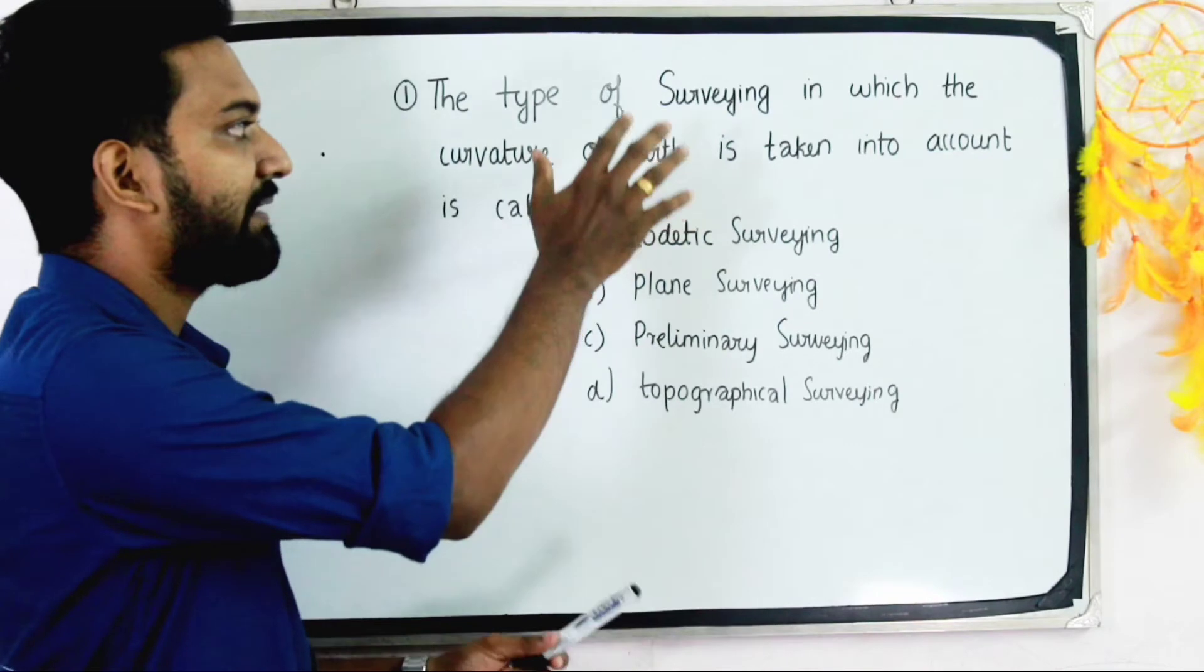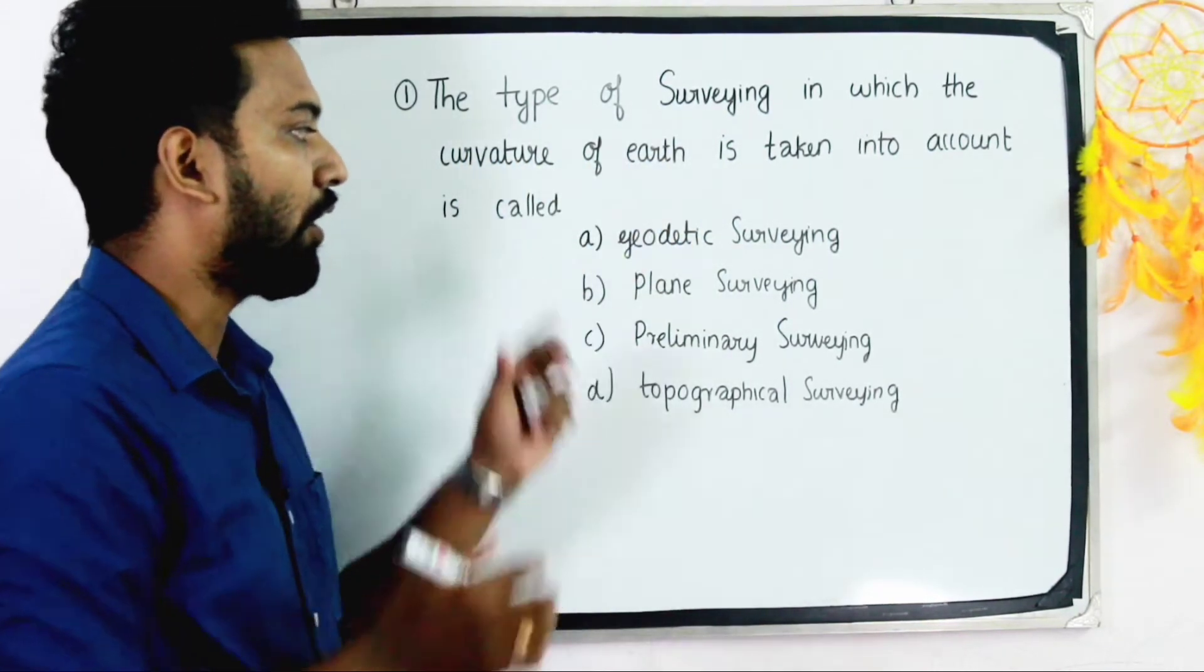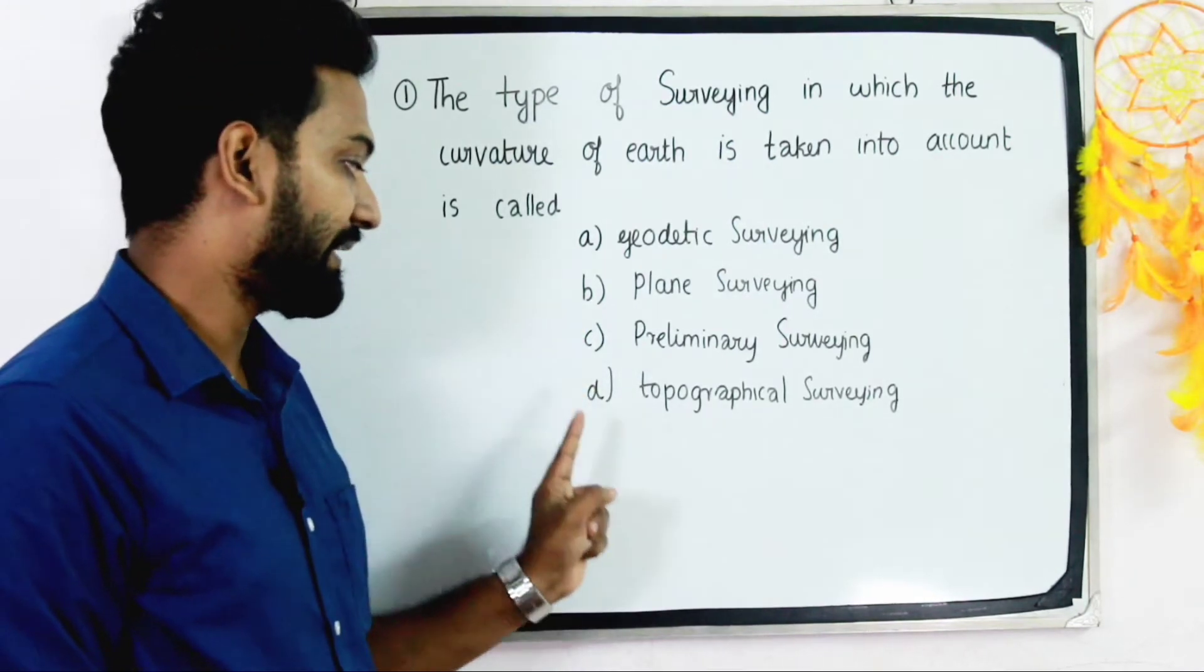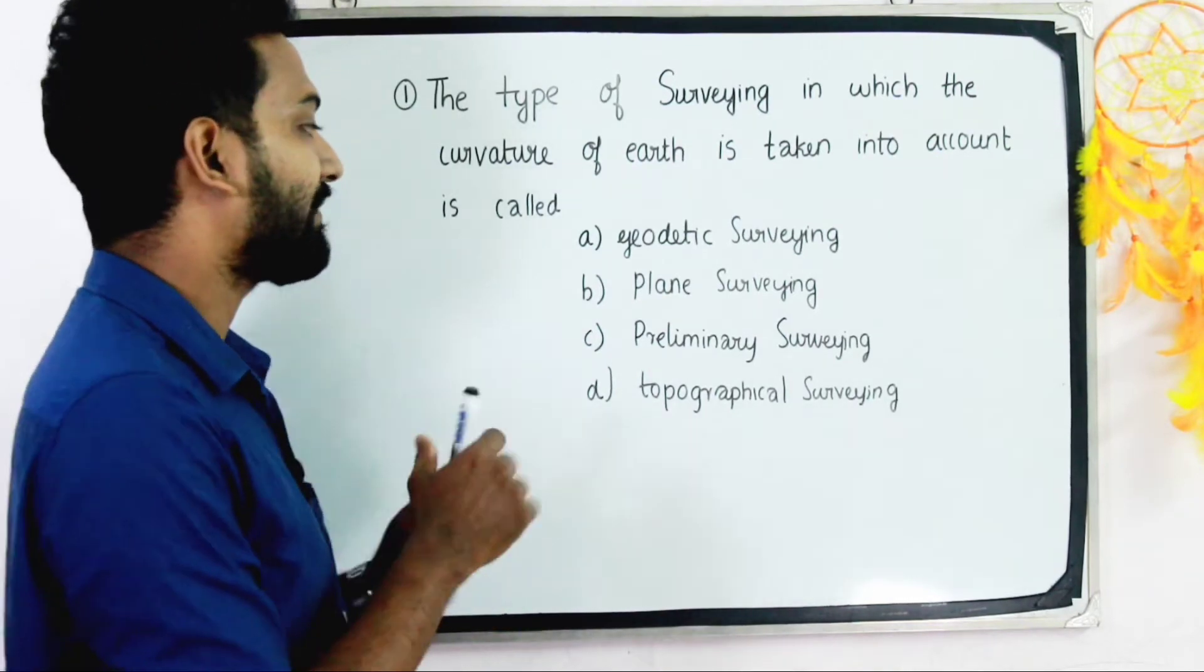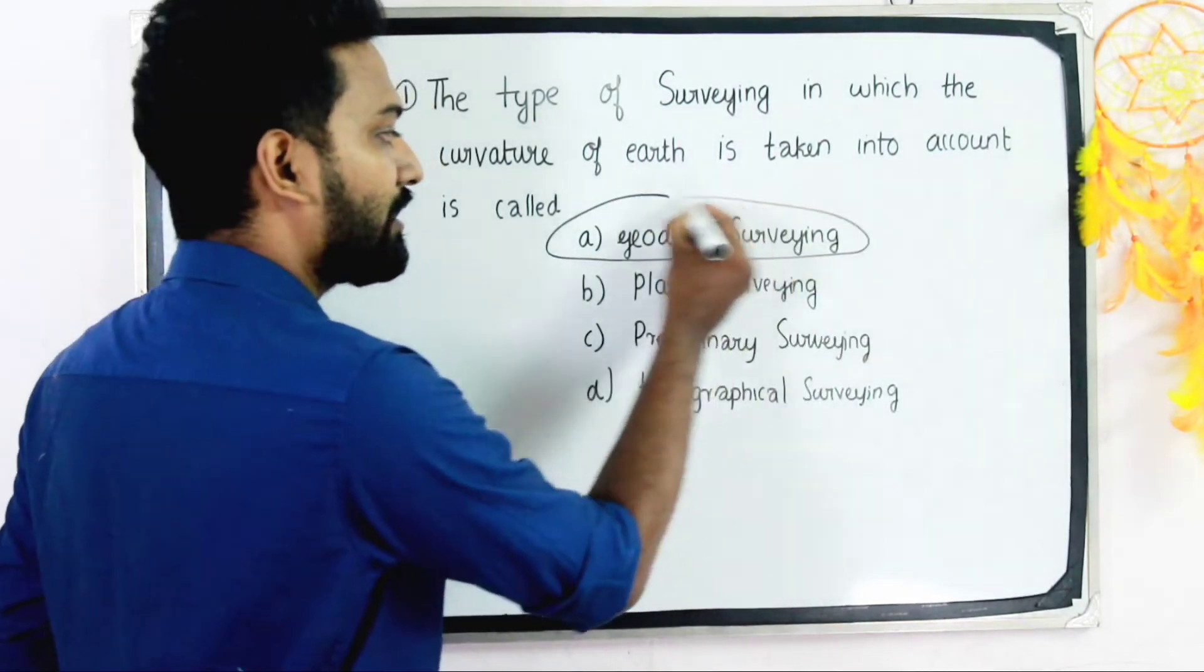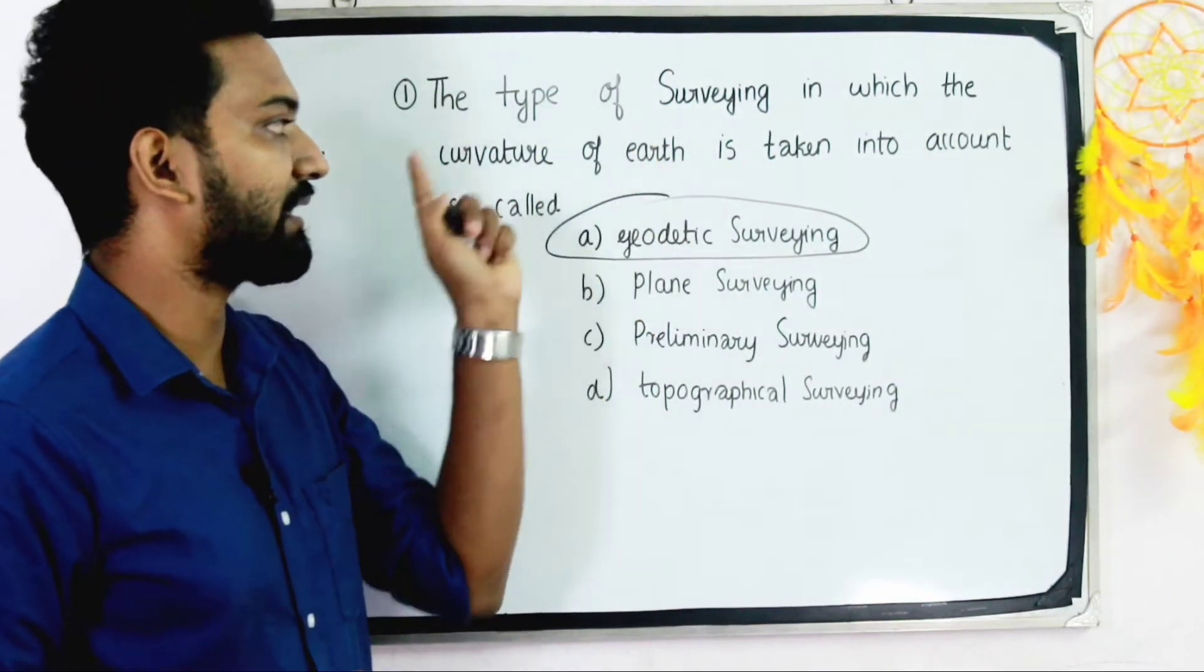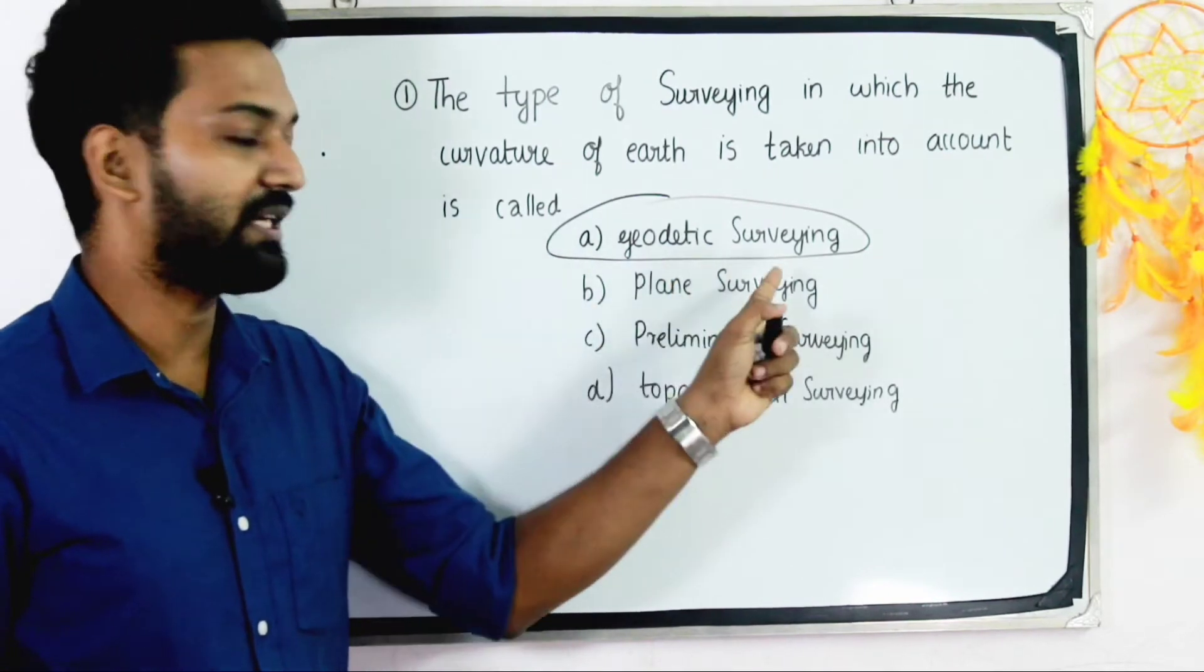The type of surveying in which the curvature of earth is taken into account is called: Option A - geodetic surveying, B - plane surveying, C - preliminary surveying, and D - topographical surveying. The answer is option A, geodetic surveying.